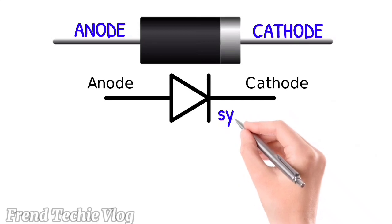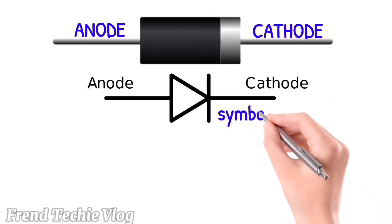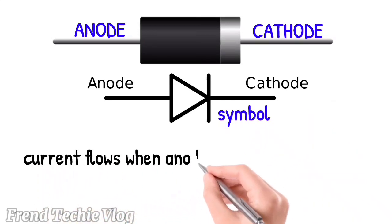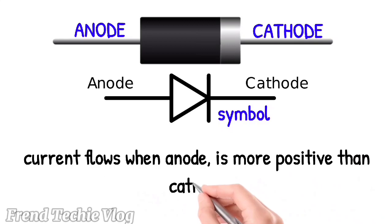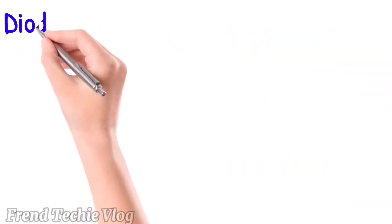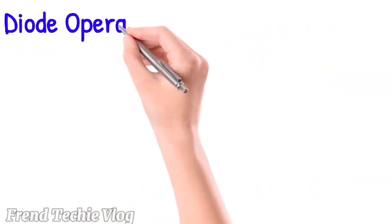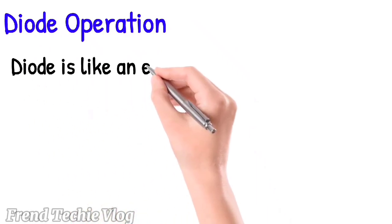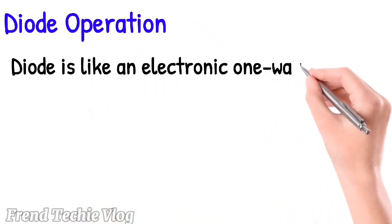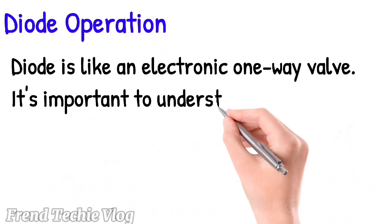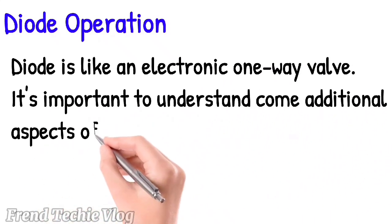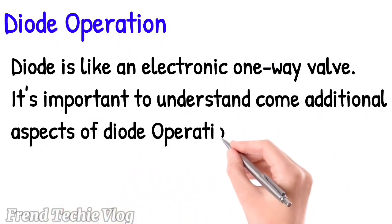The symbol: current flows when the anode is more positive than the cathode. A diode is like an electronic one-way valve. It's important to understand some additional aspects of diode operation.